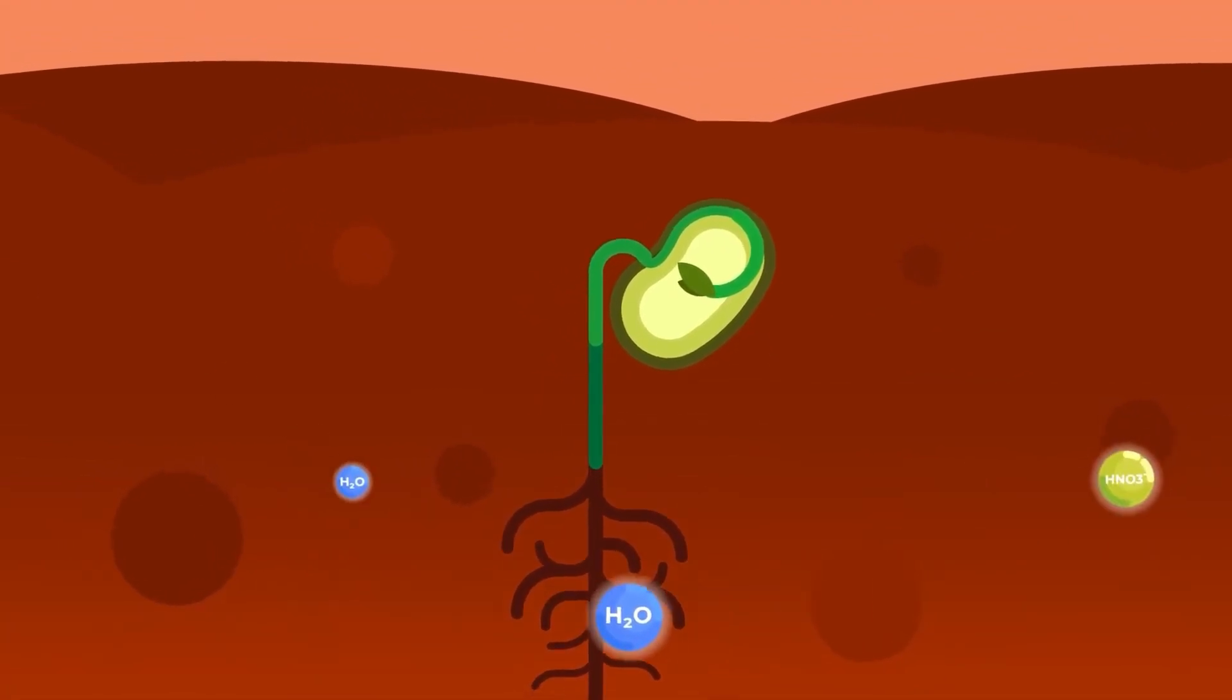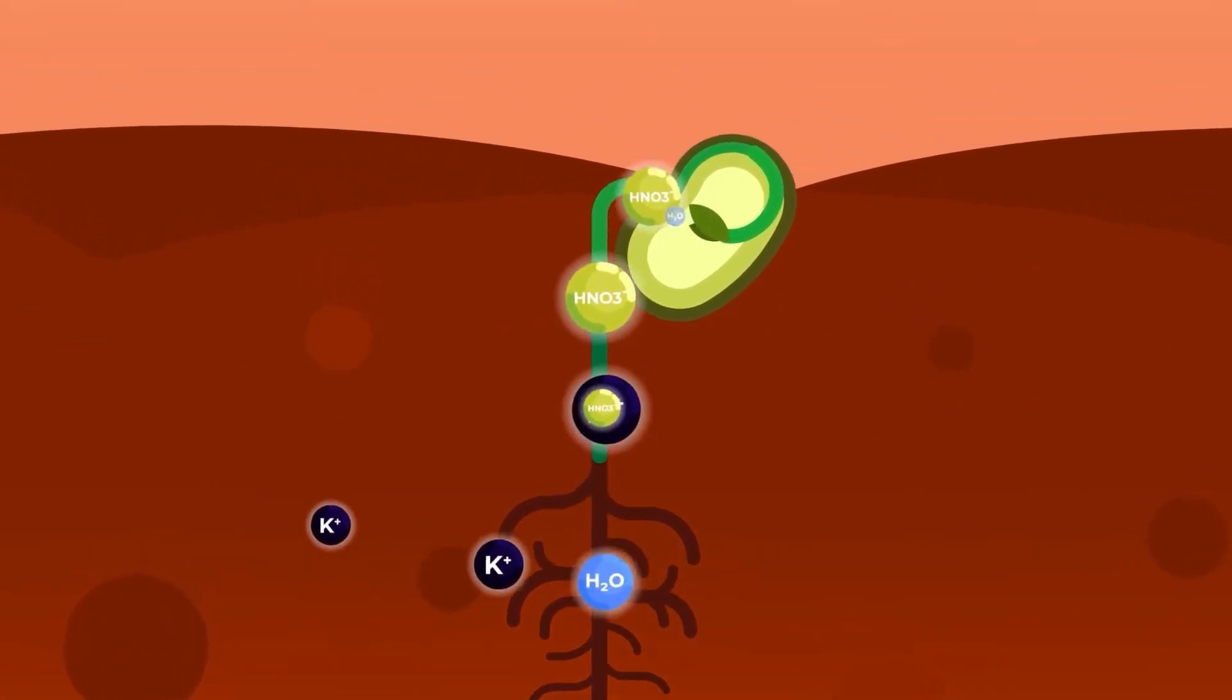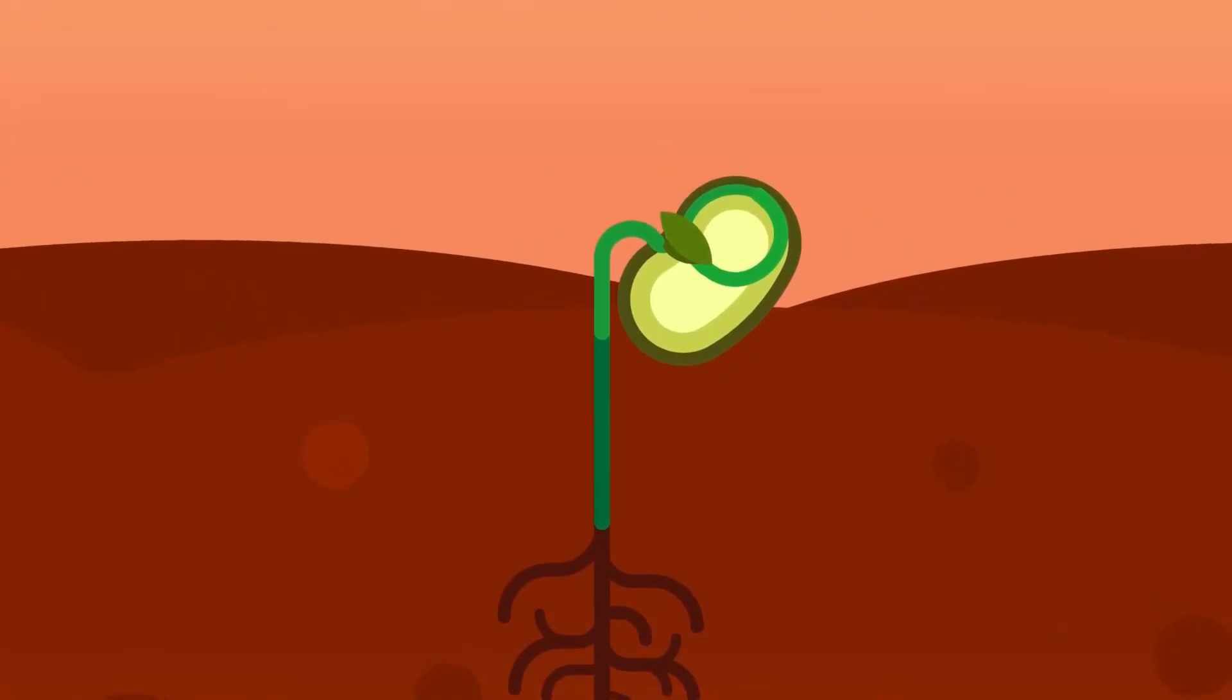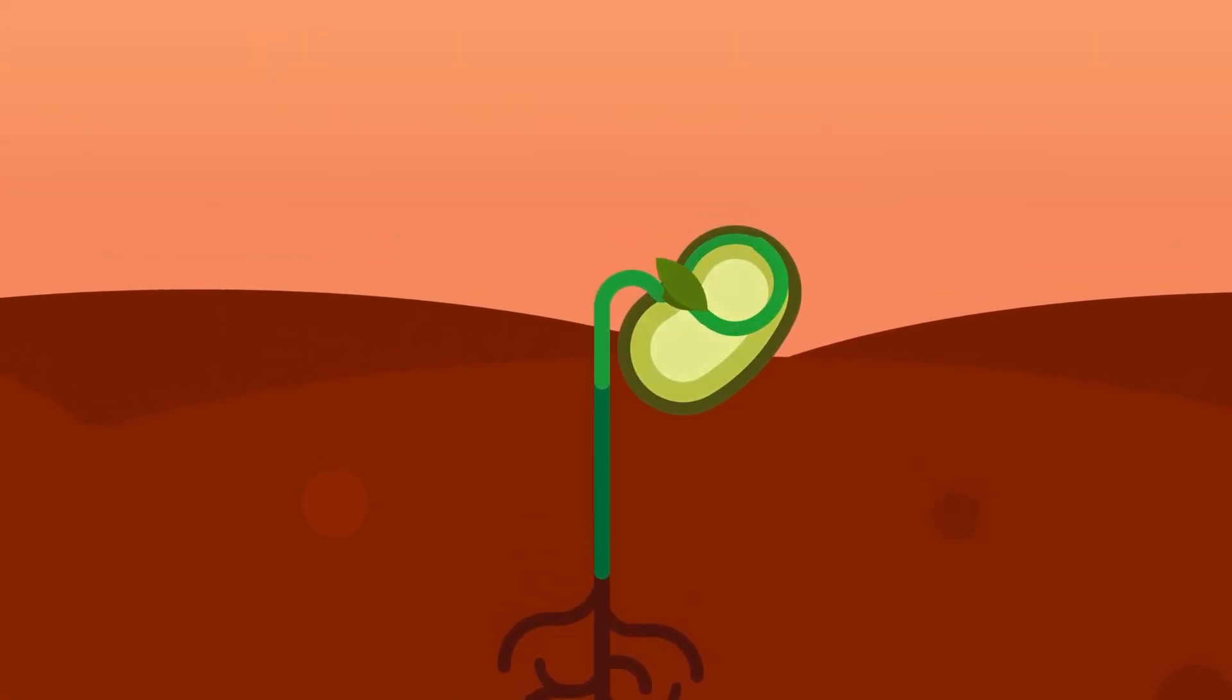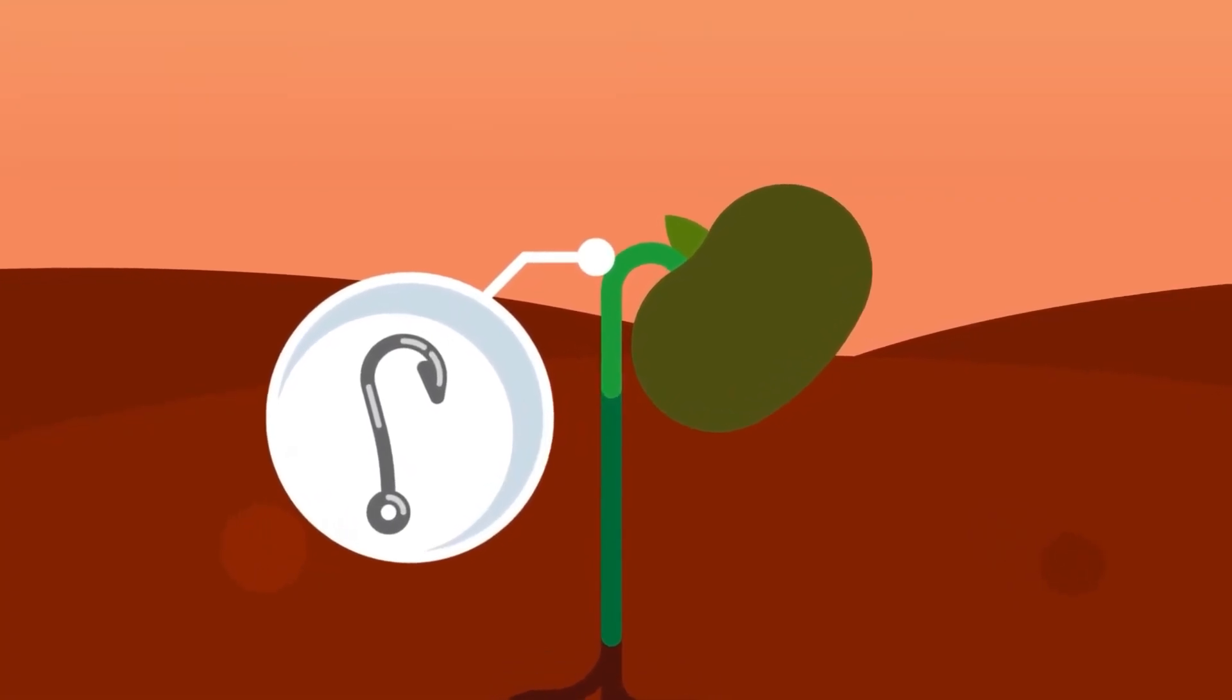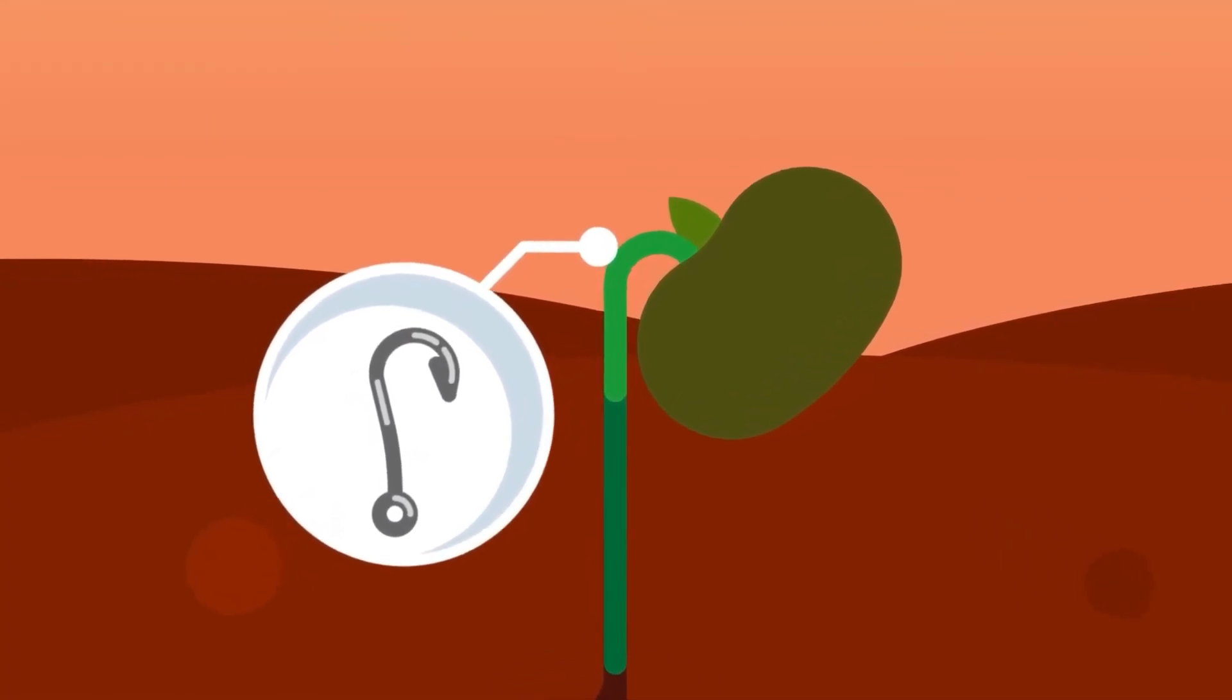Then, the lateral roots develop and help absorb water and mineral salts from the soil. Shortly after the radicle emerges, the stem below the cotyledons grows and raises it above the ground. At first, the stem is hook-like, with the cotyledons bent over and still close together to protect the delicate plumule.